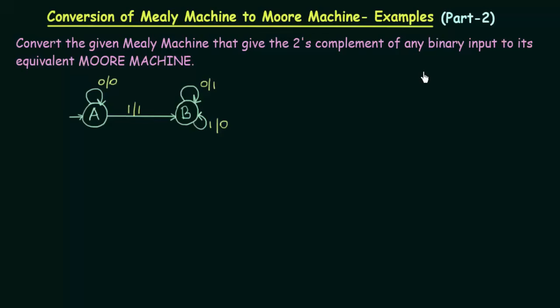In this lecture, we will be seeing another example of conversion of a Mealy machine to a Moore machine. Here is our question: convert the given Mealy machine that gives the two's complement of any binary input to its equivalent Moore machine.